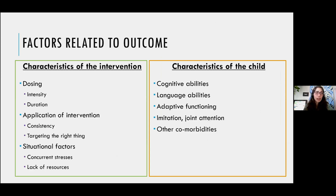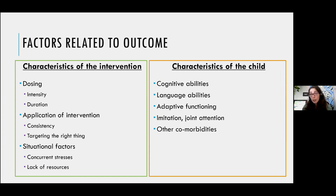When thinking about the outcome of any intervention, we have to take into account how much of the intervention we're doing, how often, how consistently, and what else is going on in someone's life. If someone is having heart surgery next week or has just been evicted, an intervention may not be as effective. There are also characteristics of the child that will make any one intervention more or less successful.